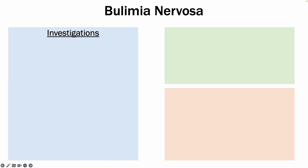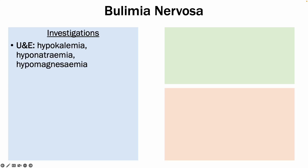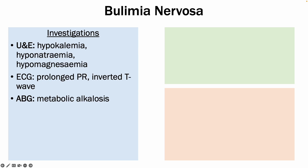In terms of the investigations, your urine and bloods would show hypokalemia, hyponatremia, and hypomagnesemia — so all electrolytes would be low. Your ECG would show a prolonged PR interval and an inverted T wave, due to the low potassium levels. Your ABG would show metabolic alkalosis, due to the loss of acid from the stomach during repeated induced vomiting.